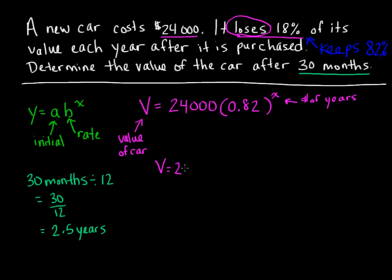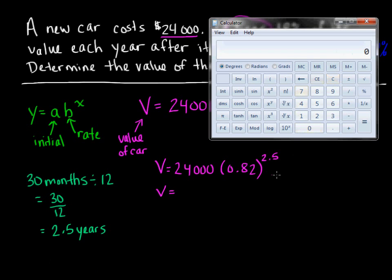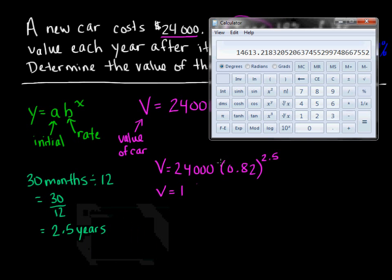So the value of the car is going to be $24,000 times the decay rate of 0.82 to the exponent 2.5. Remember the rules of BEDMAS when you're multiplying this out. We want to apply the exponent first, so 0.82 to the exponent 2.5. We do the exponent part first, then keep that number in our calculator and multiply by $24,000, and we get $14,613.22.